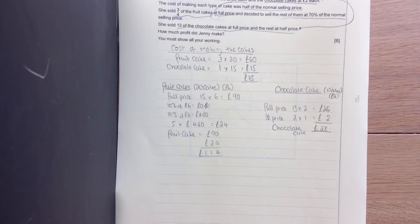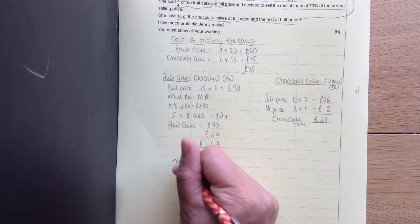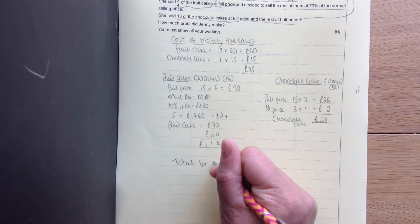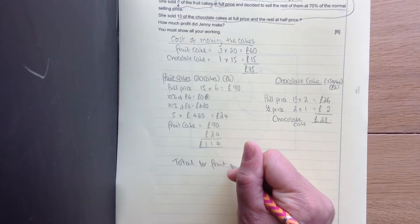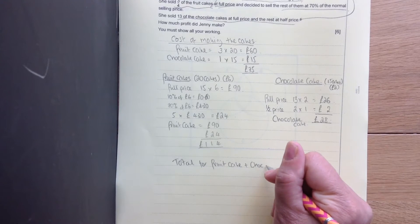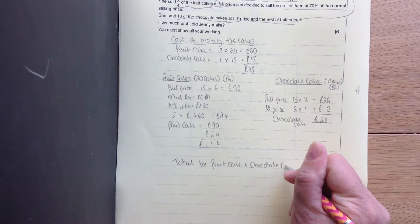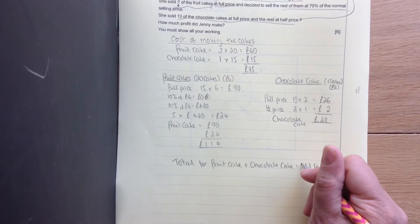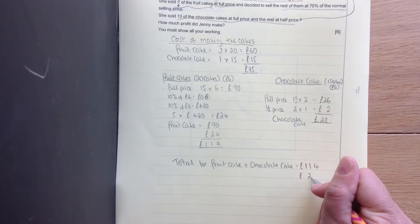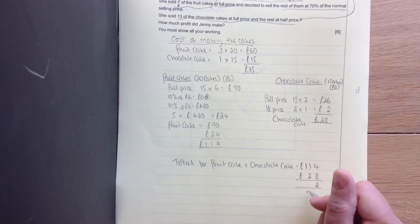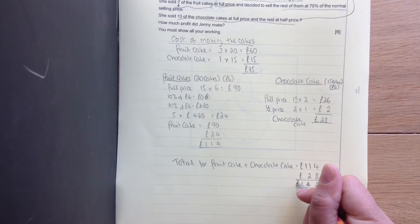Almost there now. So the total for the fruit cake and the chocolate cake is £111 plus £28. So that's going to give us £142.